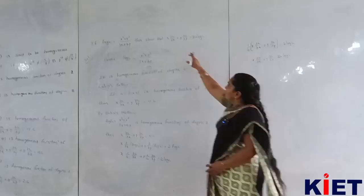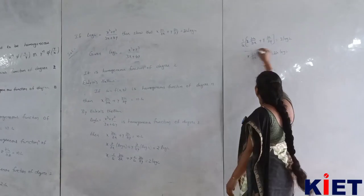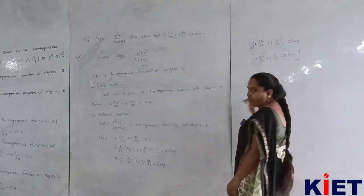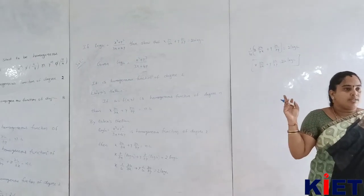What are you adding in the end? x into ∂u/∂x plus y into ∂u/∂y is 2u log u. So that for children aksar problem ni?